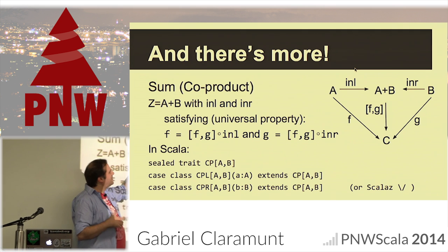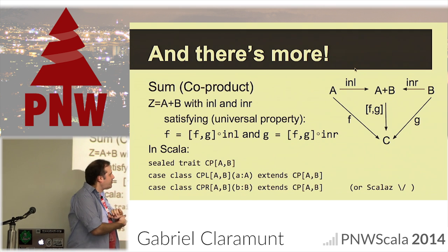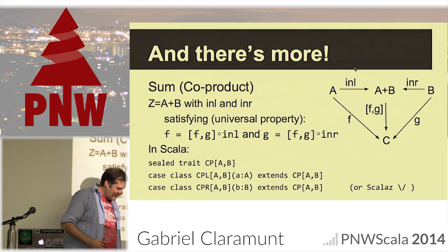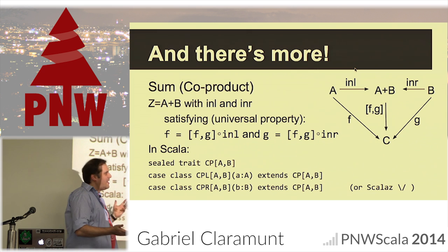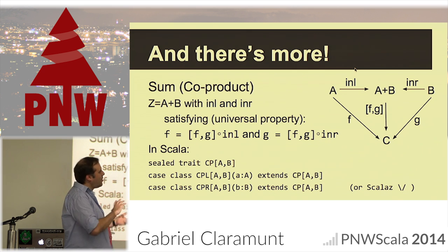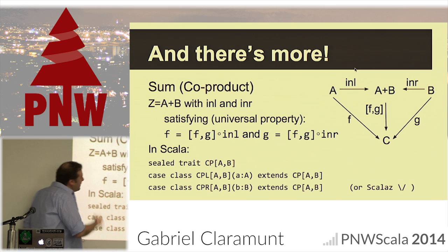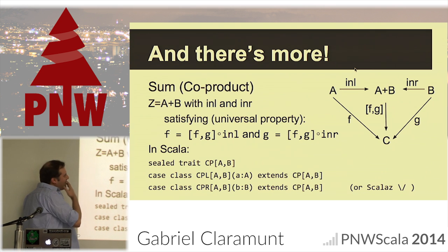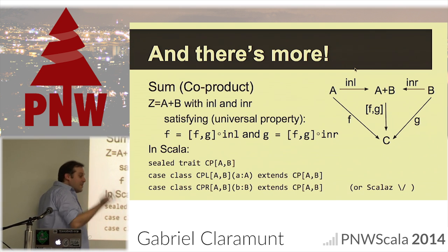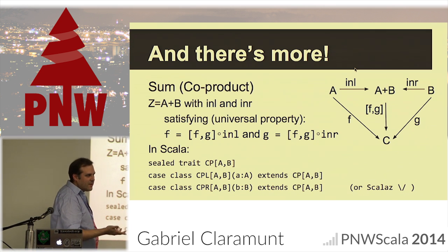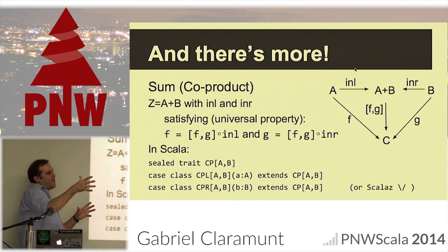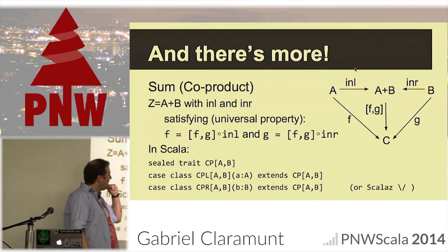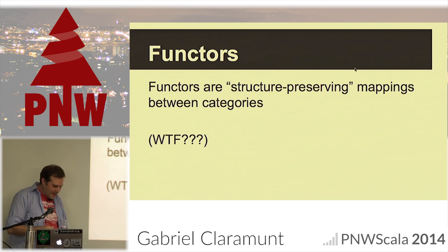The co-product is more the dual of the product. They call it 'sum' probably for historical reasons — it's like the sum as opposed to the product. Anyway, now on to the famous functors.